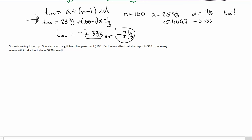So Susan is saving for a trip. Again, here we're doing more arithmetic problem solving. She starts with a gift from her parents of $100.